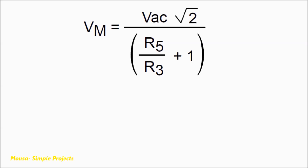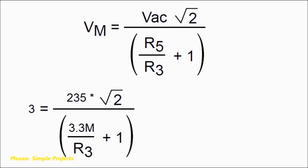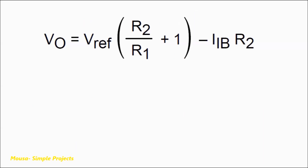The next formula is used for determining the resistor voltage divider values. According to the datasheet, Vm should be 3 volts at the high-line input AC voltage, which in my case is 235 volts. I would like to use a 3.3 megaohm resistor for R5, so R3 should be 30 kilohms.